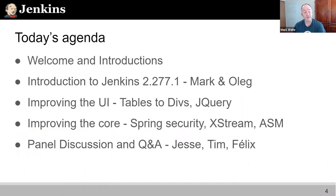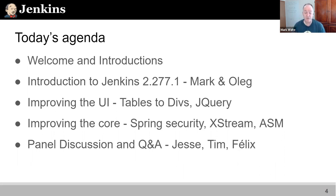By way of agenda, we're going to do these welcomes and then we'll talk through the introduction to Jenkins 2.277.1, including things related to the user interface and how we improve the core. Then we will shift into a panel discussion where we'll invite questions from the audience and questions from Oleg and from me to gain insights into what it meant to make these changes, how they were verified, and what sorts of experiences there were.